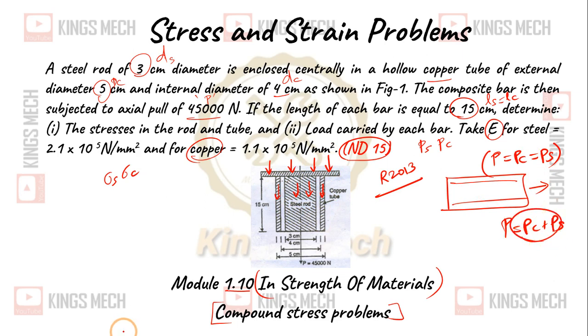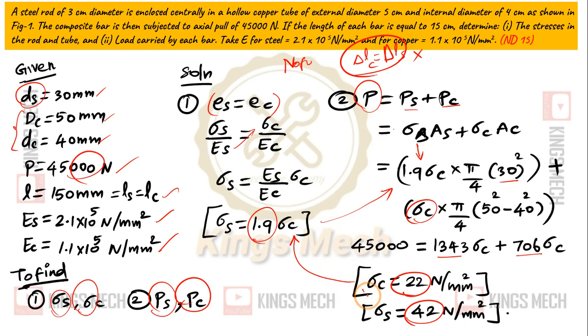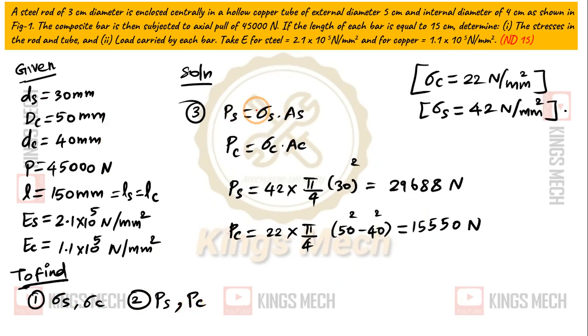The load is equal to PC plus PS. PC is nothing but stress into area, stress equal to P by A. PC is equal to Sigma into area, so Sigma S AS, Sigma C AC.